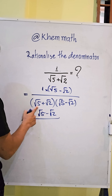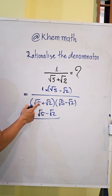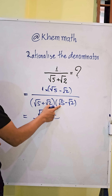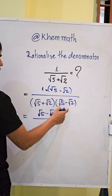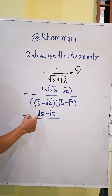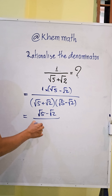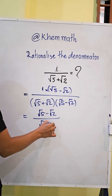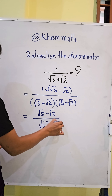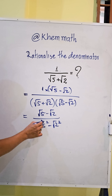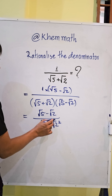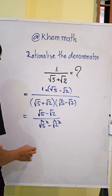Here we use the formula: (a + b)(a - b) equals a squared minus b squared. So we get square root of 5 squared minus square root of 2 squared. We then simplify square root of 5 squared and square root of 2 squared.